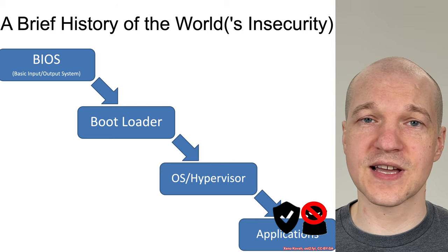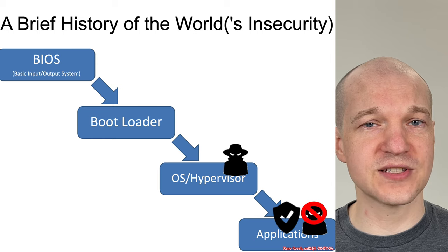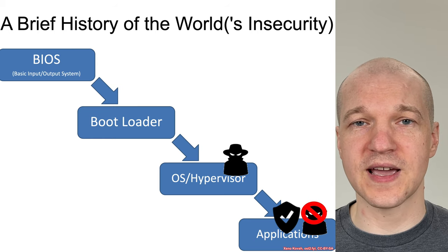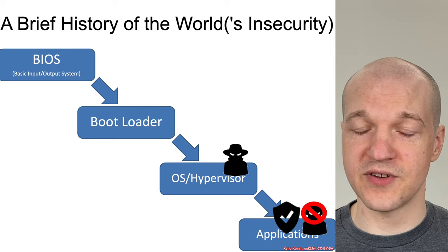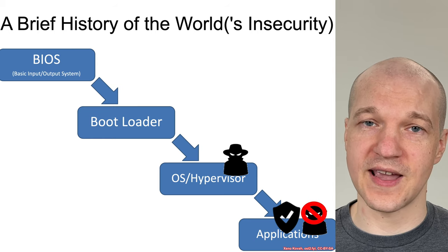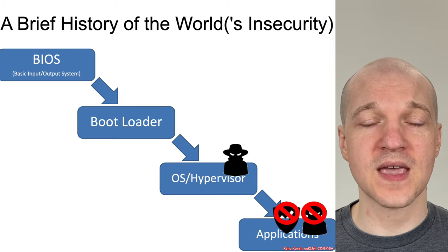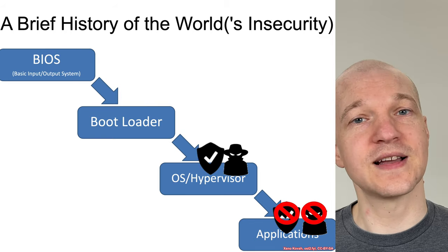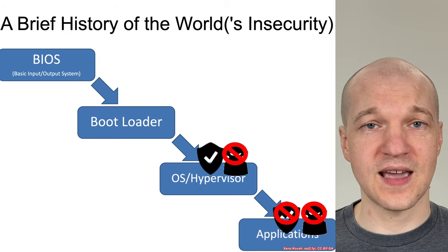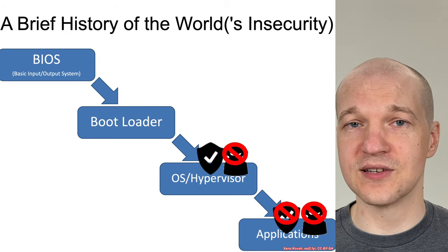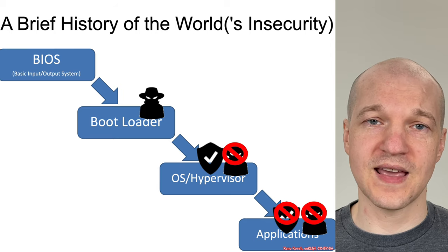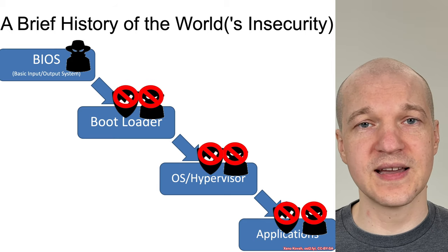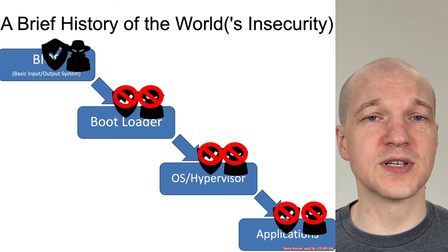Attackers got the bright idea that if they just move one level up, they're going to have more power and privilege than the defensive software and will be able to defeat it. The defensive software recognized this and needed to get up there too in order to defeat the malware. That process continued back and back until you finally get to the firmware level.